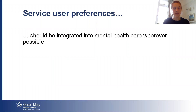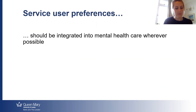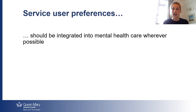Service user preferences should be integrated into mental health care wherever possible. This is recommended by government guidelines and the new mental health act cites choice and autonomy as the first of four guiding principles. In the arts therapies there is an opportunity for service users to choose between the art forms, so it would be helpful to understand how we can support people to do this, especially as they may not really know what the arts therapies involve.